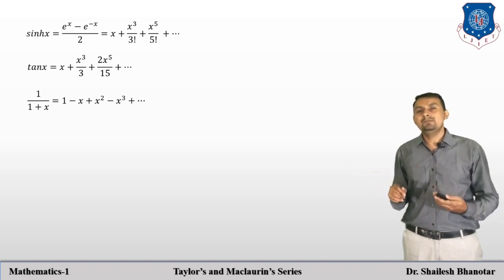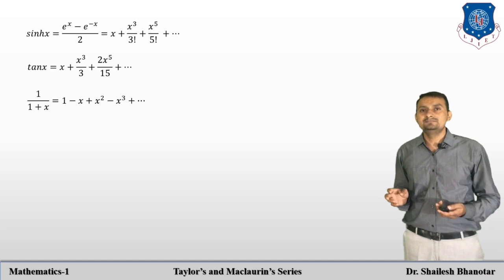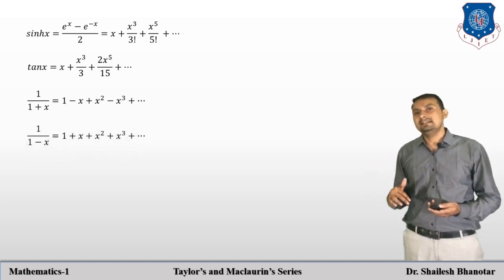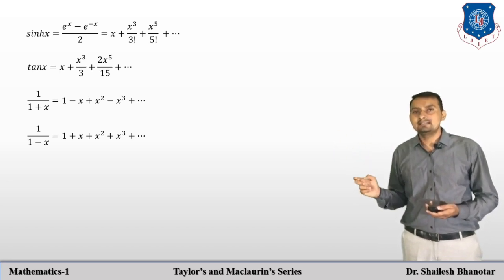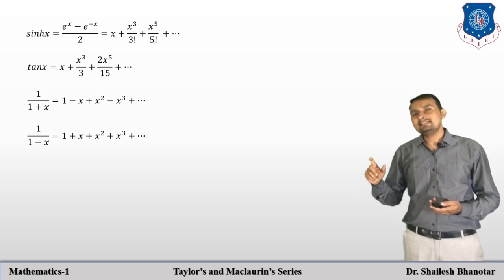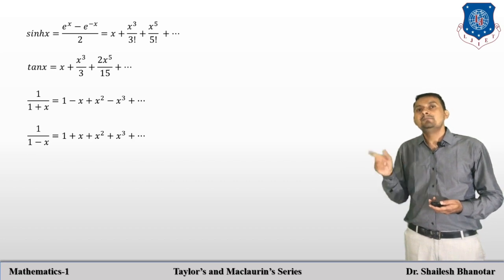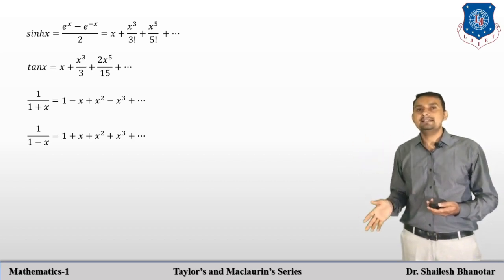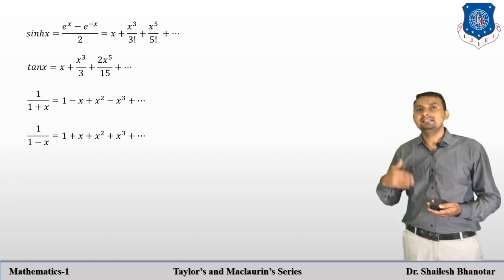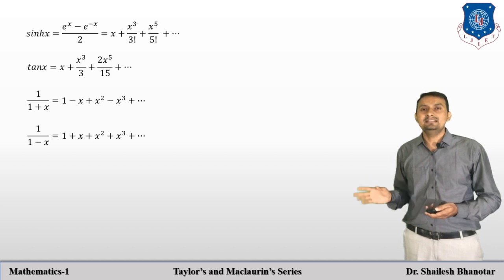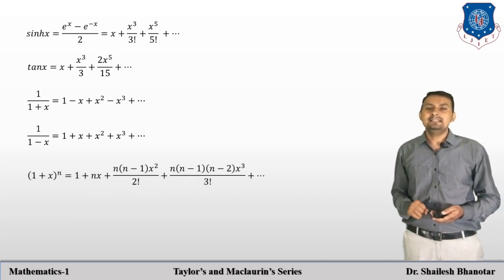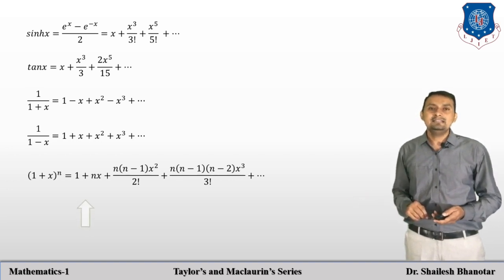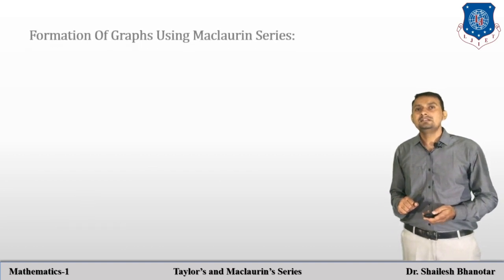For 1/(1+x), the Maclaurin series gives: 1 − x + x² − x³ + and so on. We will keep this in mind as we will use it later. For 1/(1−x), replace x with −x in the above expression: the result is 1 + x + x² + x³ + and so on — all terms are positive. We should also keep in mind the binomial expansion, which can also be derived using the Maclaurin series.